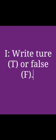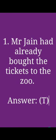The first exercise is Write True or False. Write T for true sentences and F for false sentences. Let us solve the first one. The first question is: Mr. Jain had already bought the tickets to the zoo. The answer is true.